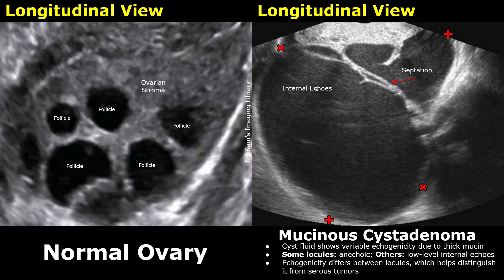On the right we see an ovarian mass. It is a mainly anechoic mass with some internal echoes and septations. These walls inside the mass are the septa. Instead of seeing a single cystic cavity, we observe multiple cystic compartments known as locules within the same ovarian mass. These locules are numerous, vary significantly in size and shape, and can be closely packed together. Because of this arrangement, the lesion does not appear uniform — instead, it forms a complex but organized cystic structure.